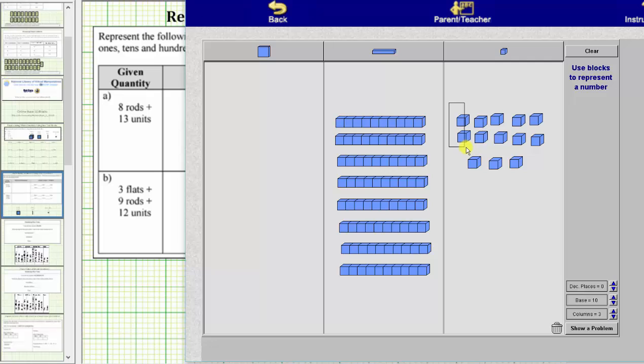We can exchange these 10 units for one rod and move the rod to the next column, which shows eight rods plus 13 units equals nine rods plus three units, giving us the number 93.